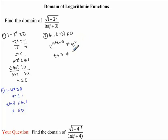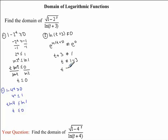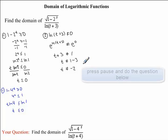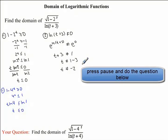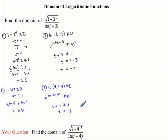So we have t plus 3 cannot equal... and e to the exponent 0 is one of our properties, so we know that it equals 1. Now this is very easy to solve for t. We're going to have t cannot equal 1 minus 3, and so t cannot equal negative 2. I would now like you to state the restriction for the denominator found in your question.